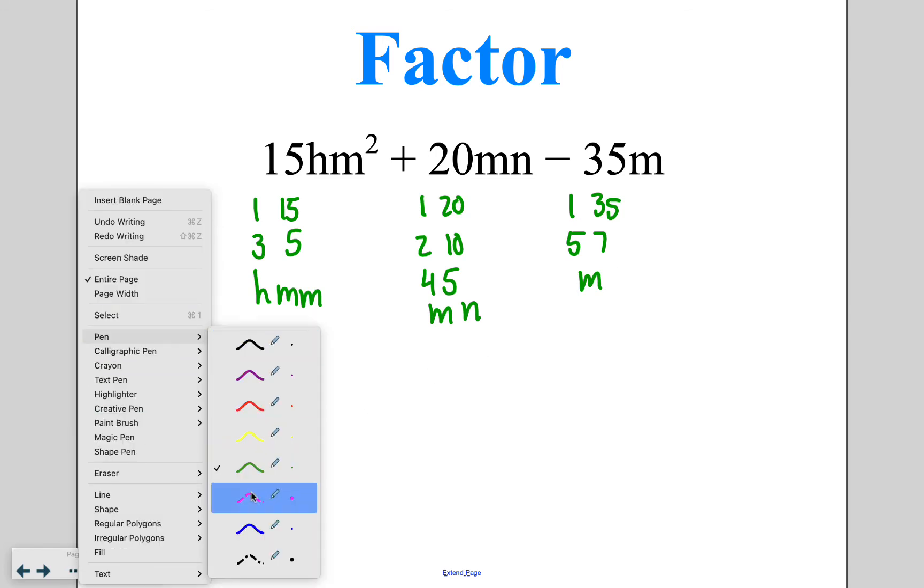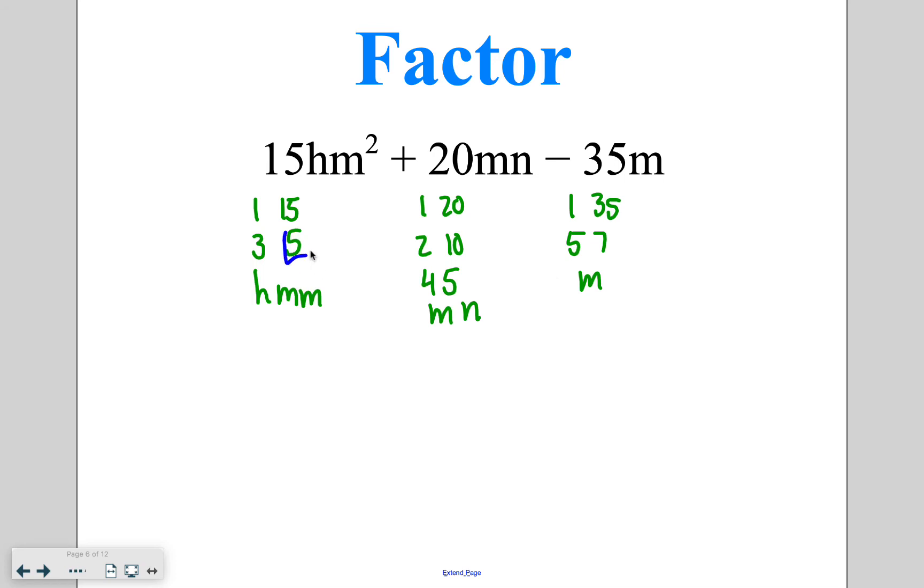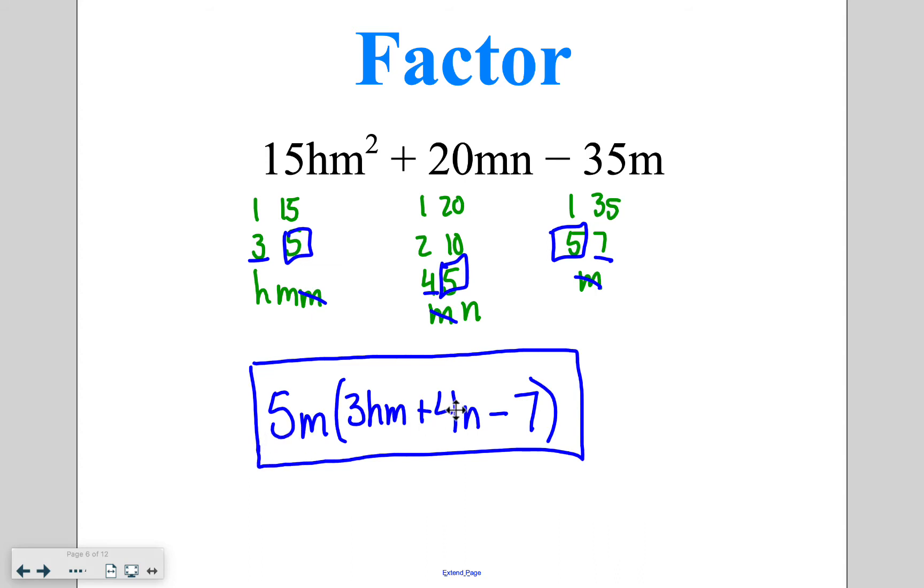As I go through and I look at all three lists, we notice that 5 is the largest number that appears on all of the lists. I have an m that can be taken out of each term. So that's our GCF. Now for the factor part, we put the leftovers into parentheses. Since I took out 5 and 1m, I've got an h and an m left over from the first term. Then I'm going to add on my leftover numerical factor of 4 and variable factor n. And from the last one, I just have a numerical factor of 7 that is left over with no variables. So my factored form is 5m times the quantity of 3hm plus 4n minus 7.